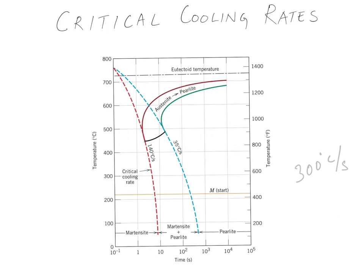One more thing: iron-carbon alloys containing less than 0.25% carbon are not formally heat treated to form martensite, because the quenching rate required is too rapid to be practical. So adding more carbon increases the chances of your critical cooling rate assuming smaller and smaller values. That's it — thanks for watching.